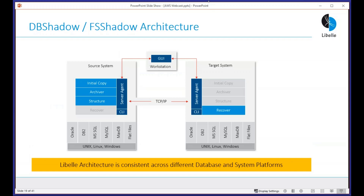The server agents sit on the source and target systems. We provide a management interface — currently Java-based, with a new web-based version already available in parallel — that communicates with a master server, which in turn communicates with the worker agents. Those agents have generic processes: copy and archiver on source, and recover on the target. It ties into the respective databases — Oracle, DB2, MS SQL Server, MySQL, MaxDB, ASE, and HANA DB.